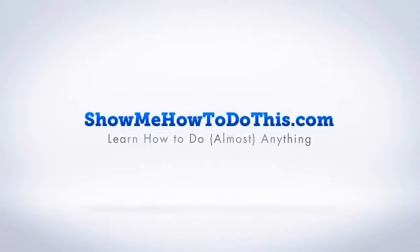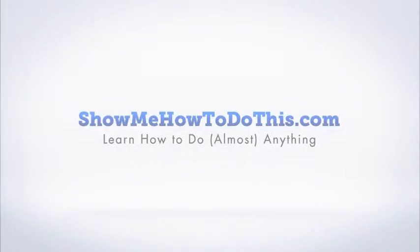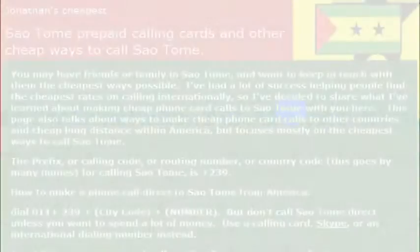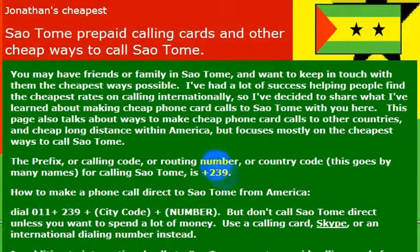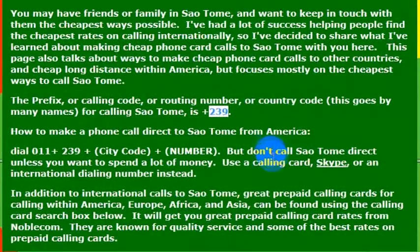If you want to reach Príncipe or São Tomé, which is part of the same place — or at least as far as the dialing code is concerned — you would need to know the number to reach that country. The dialing code to reach there is 239.